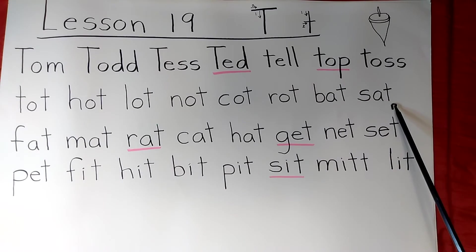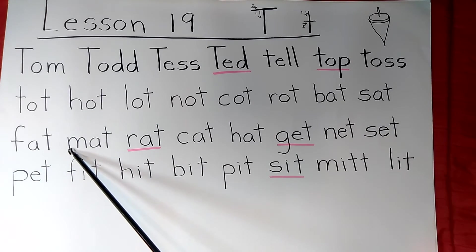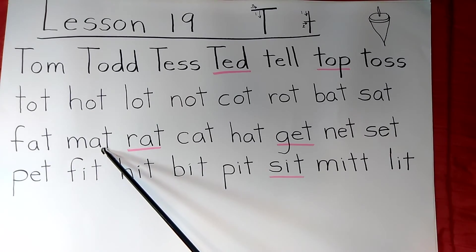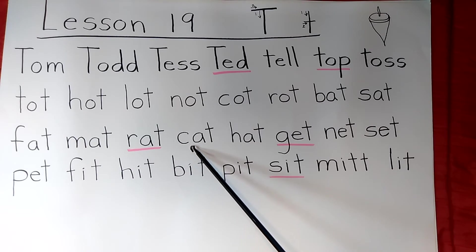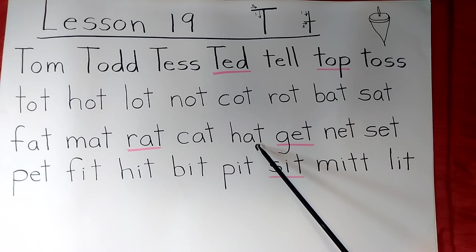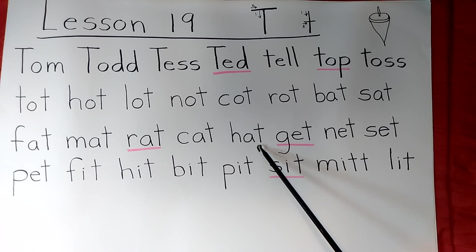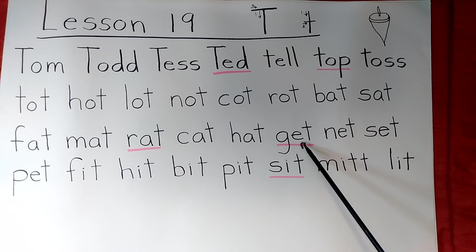Now we've got a few more rhyming words: bat, sat, fat, mat, rat, cat. So we've got seven rhyming words.